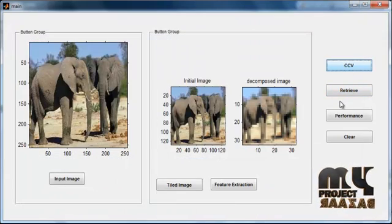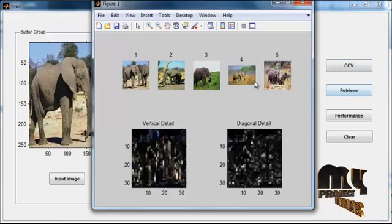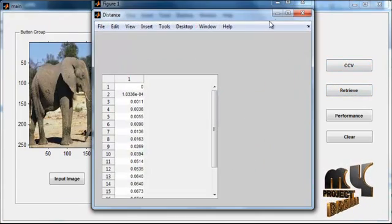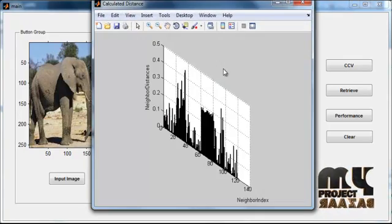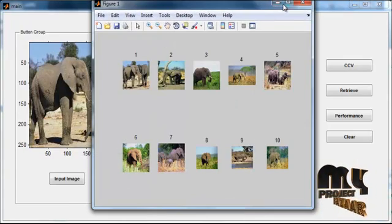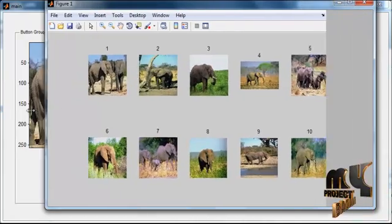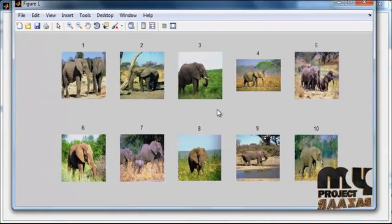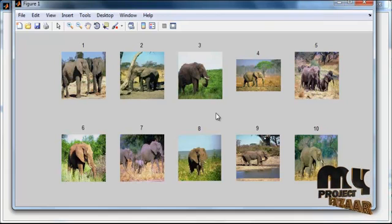Then click the button Retrieve. After clicking the button Retrieve, you can see the retrieved image in a subplotted form. The category which we have selected is Elephant, so the retrieved images will be the elephant images.